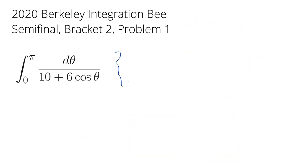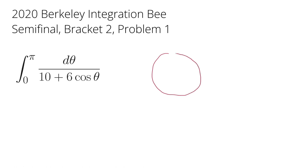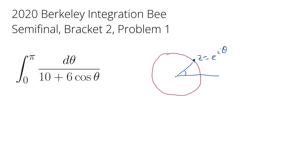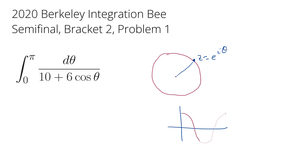Now let's evaluate the original integral. Here θ changes from 0 to π, which corresponds to z on the unit circle rotating from 0 to π. To apply the winding number concept, we really want to rotate all the way around from θ equals 0 to 2π. Since cosine of θ has a clear symmetry about π from 0 to 2π, this forces the integral to equal one half times the integral from 0 to 2π of the same integrand.